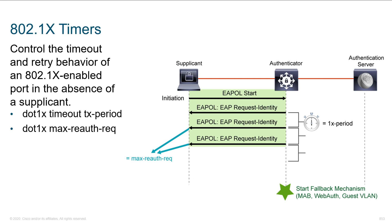Looking at our timers: we can control the timeouts, which changes the behavior between when we send identity requests and when we retransmit. We go through the maximum retransmissions before concluding the device won't authenticate. By reducing timers we can expedite the process, but the downside is that slower endpoints may time out prematurely — someone on a 10-year-old laptop with a spinning hard drive loading lots of software might not get to EAP in time and inadvertently trigger MAB. This is something to be mindful of when tweaking these timers in environments with slower supplicants.